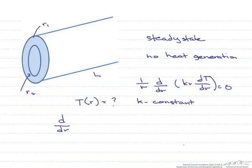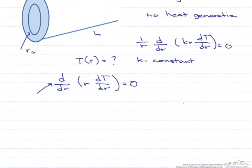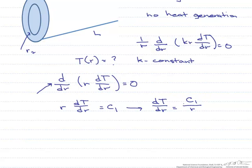So it's now d/dr(r*dT/dr) equals 0. Let's do the first integration, which involves this term here. If we do that, we're left with r*dT/dr equals a constant, or we can rewrite this as dT/dr equals c1 divided by r.